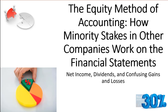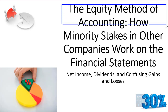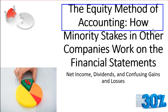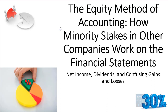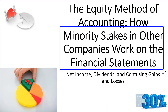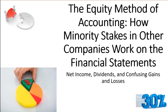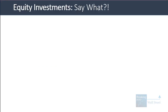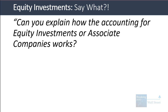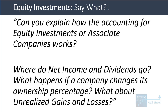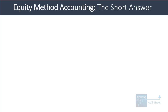Hello and welcome to another tutorial video. We're going to cover the equity method of accounting, otherwise known as equity investments for associate companies. This topic is all about how minority stakes in other companies work on the financial statements. The accounting treatment is slightly confusing, and we've gotten a number of questions about this over the years. The typical questions we get: can you explain how the accounting for equity investments or associate companies works? Where do net income and dividends go? What happens if a company changes its ownership percentage? What about unrealized gains and losses?